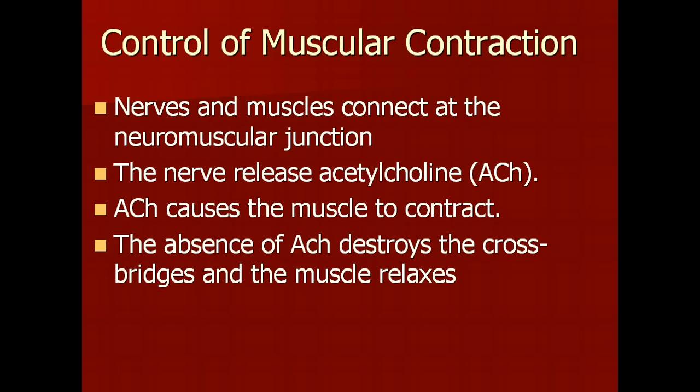The control of muscular contraction occurs where nerves and muscles come together at the neuromuscular junction. The nerve releases acetylcholine, abbreviated ACH. Acetylcholine causes the muscles to contract. In the absence of acetylcholine, the cross bridges are destroyed and the muscle relaxes.